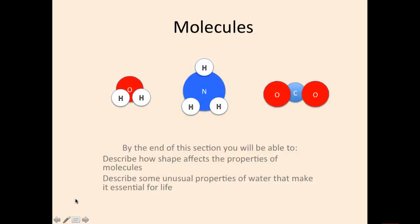You saw in the previous section that atoms can combine chemically through bonds to form molecules. If the same atom is bonded to itself repeatedly, we get an element. And if different atoms bond to one another, we can get compounds.